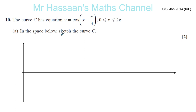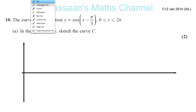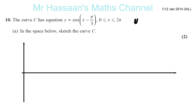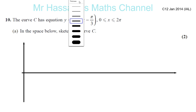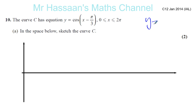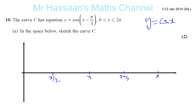So how are we going to go about doing this? First of all, let's think about what y equals cosine x will look like — y equals cosine x between 0 and 2π. Let's divide this into pi over 2, pi, 3 pi over 2, and 2 pi.